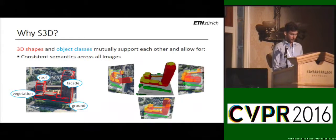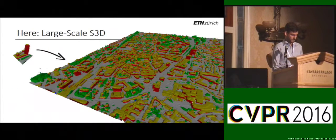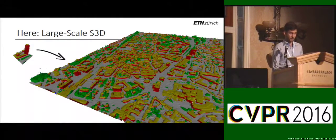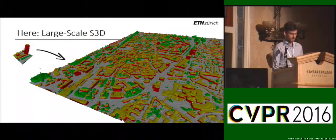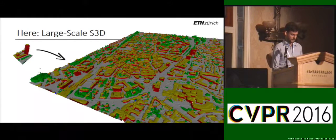Furthermore, this mutual support leads to consistent semantics across all images, as illustrated in the right figure here. This joint approach leads to attractive results; however, up-to-date methods are memory-hungry and computationally expensive. In our work, we will demonstrate how it is possible to scale one of the available methods up to be able to reconstruct whole cities, which allows for realistic applications.